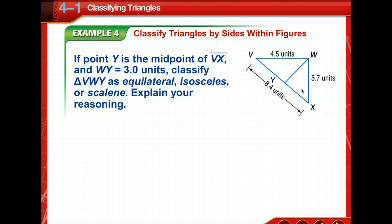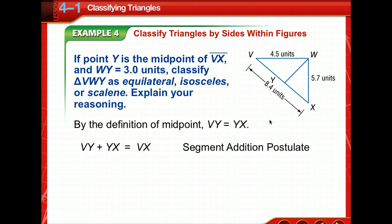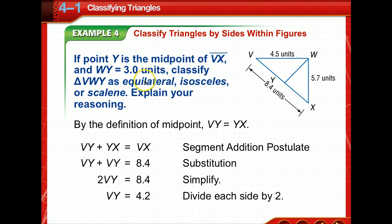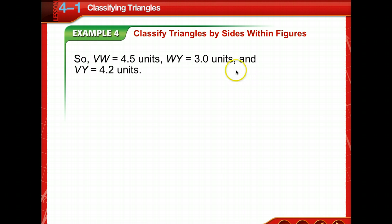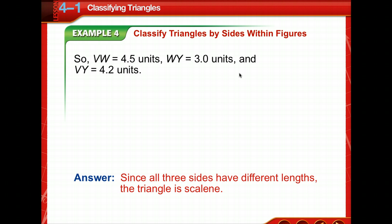Okay, now we're going to classify triangles by sides within figures. So, we're told that point Y is the midpoint of VX, so that tells us that VY and YX are the same measure. They're equal to each other by definition of midpoint. Segment addition postulate tells us VY plus YX is equal to VX. By substitution, since we know the measurement of VX is 8.4, we'll substitute that in. And since VY is equal to YX, we're going to substitute a VY in for YX. Now, we've got two VYs equal to 8.4. Divide both sides by two. Now, we know the measurement of VY. So, VY is 4.2, VW is 4.5, YW is 3 units, so none of the sides have the same length. This one is scalene.